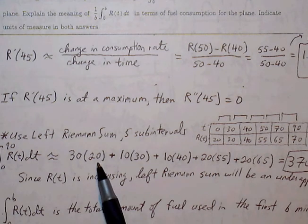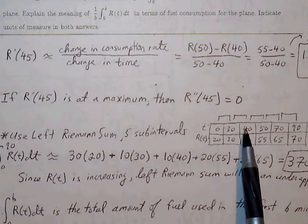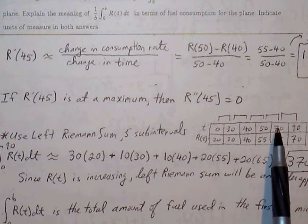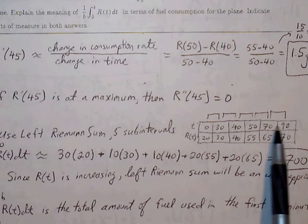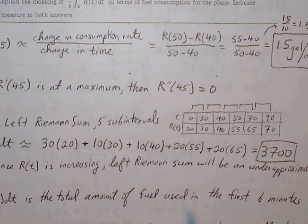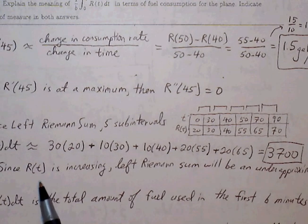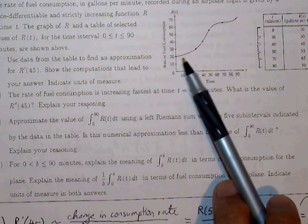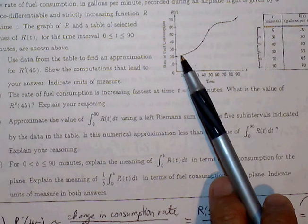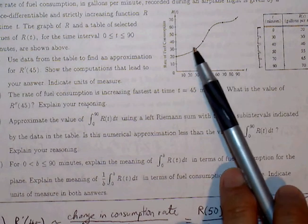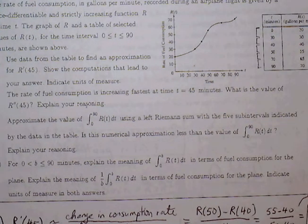The distance between 50 and 70 is 20, so 20 times 55. Between 70 and 90 is 20, so 20 times 65. Adding up the areas of all these rectangles, we get 3,700. Since R of T is increasing, a left Riemann sum indicates this is an under-approximation. If you draw left rectangles for an increasing graph, a left Riemann sum will always provide gaps underneath the graph, showing it's an under-approximation.